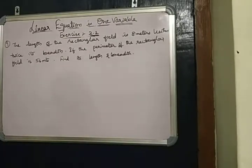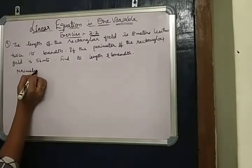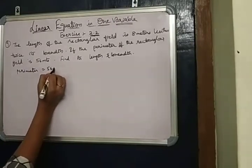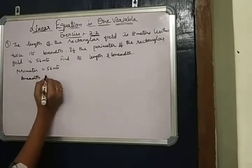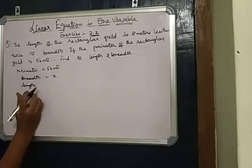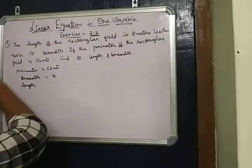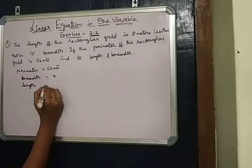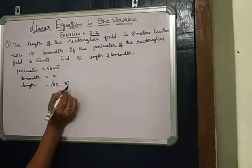In this question, the given perimeter of the rectangular field is equal to 56 meters and we don't know the breadth. Breadth is x. The given length is, the length of the rectangular field is 8 meters less than twice its breadth. Twice its breadth means we take it as 2x, 8 meters less than that is 2x minus 8.